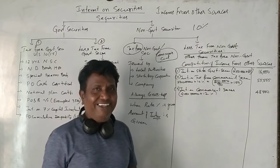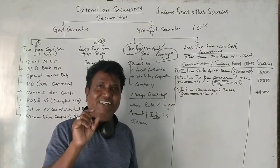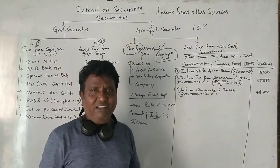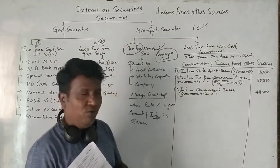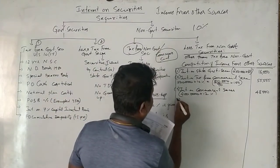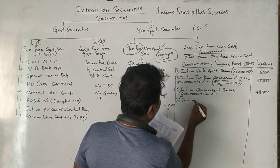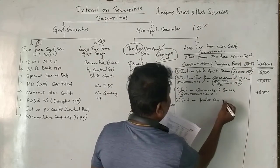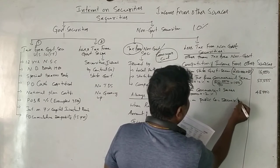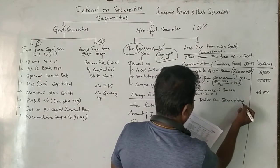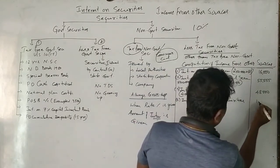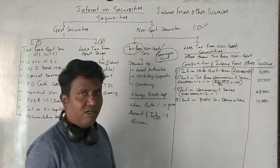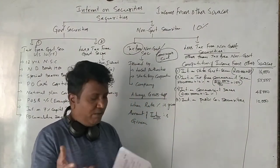Next: rupees 10,000 gross received as interest on public limited company securities. Whenever the word 'gross amount' is given, please don't do anything — just write it as is. It is fully taxable. So interest on public company securities = 10,000 rupees. Since it is already stated as gross amount, no need of grossing up.